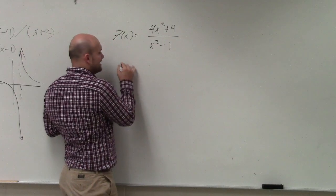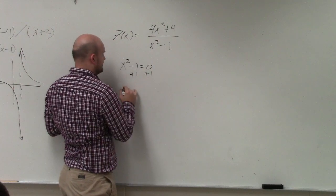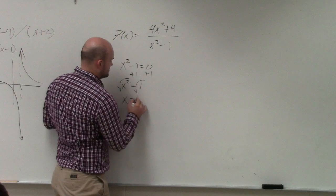the discontinuities are whatever makes the denominator equal to 0. So you set that equal to 0. So you'd say x squared minus 1 equals 0, add 1, add 1, x squared equals 1, square root, square root, x equals plus or minus 1.